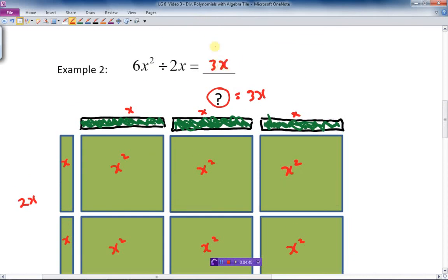The answer then will be 3x. And does 3x times 2x give us 6x squared? Yes, it does. 2 times 3 is 6. x times x is x squared. We did it correctly.